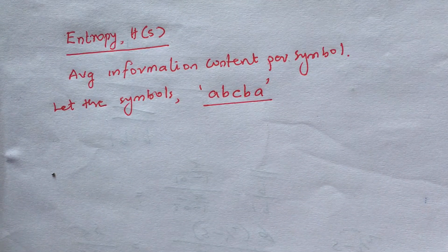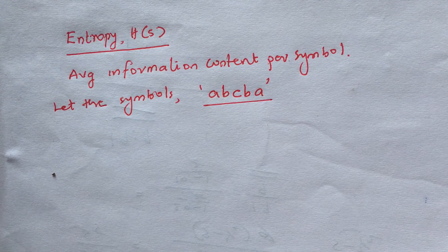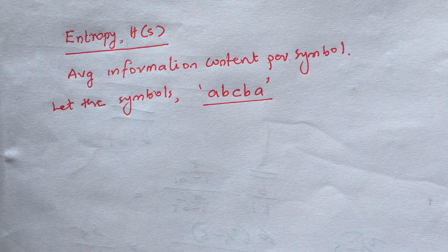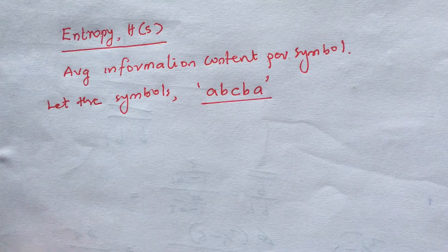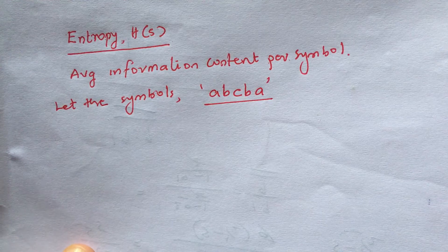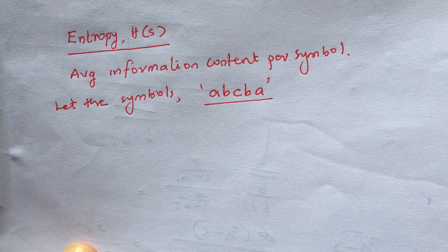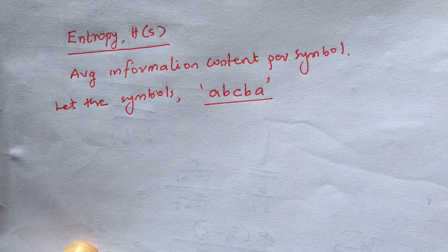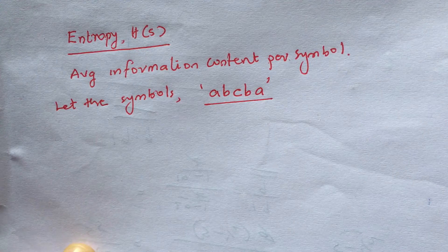Now we are going to discuss entropy of a source. Entropy is the average information content of a source — how much information is included in a symbol on average.